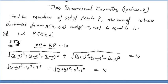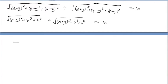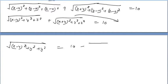When you have such an equation with two square roots summed equal to a constant, your target is to remove the roots. The simple way is to take one root on each side. So we move one square root to the other side: √[(x-4)² + y² + z²] = 10 - √[(x+4)² + y² + z²].